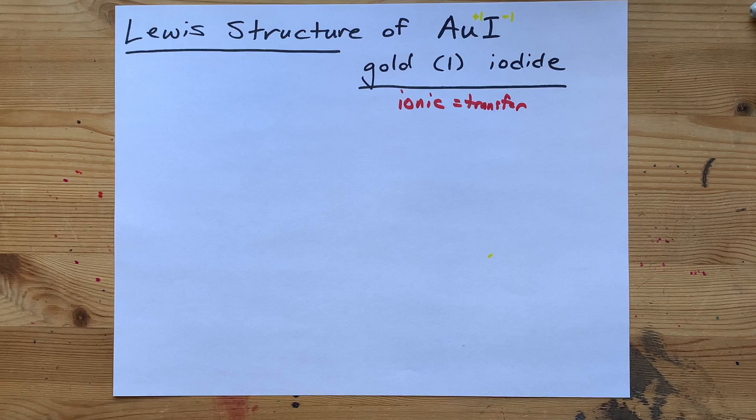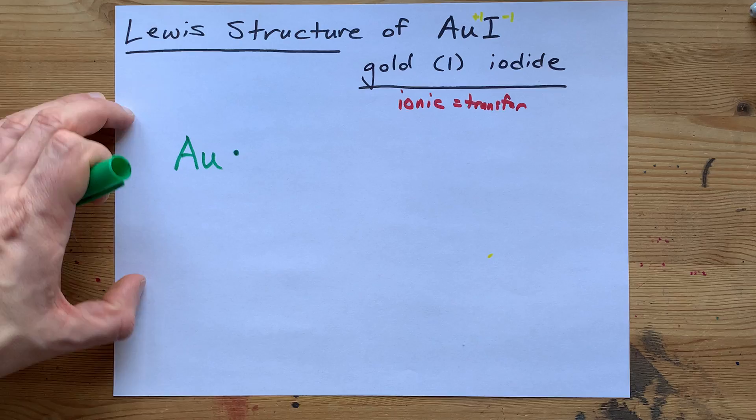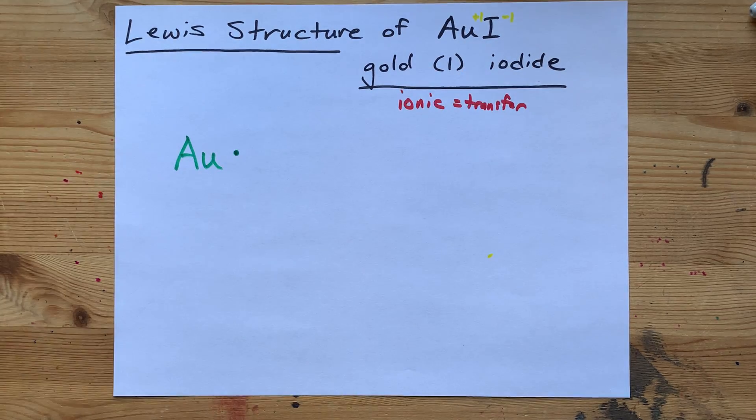Gold has a charge of 1. So draw Au with an electron on it. One electron for the charge of 1.